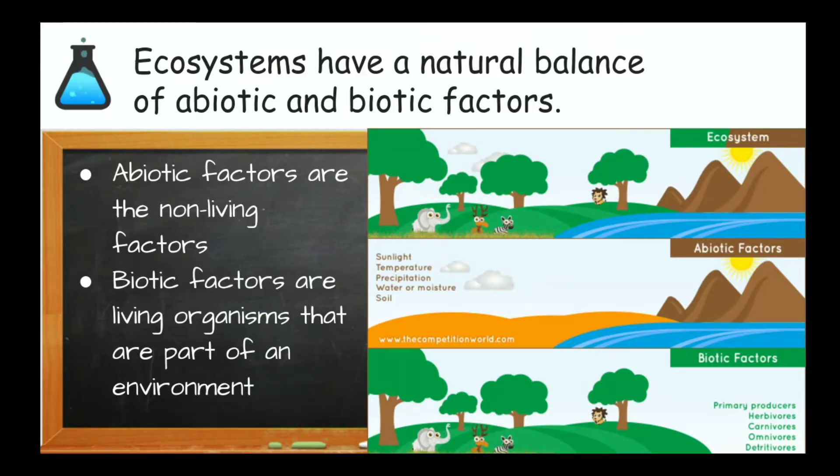While biotic factors involve living things, which can involve producers, consumers, herbivores, carnivores, decomposers, etc. So an ecosystem is composed of these two factors together.